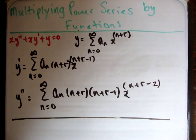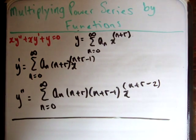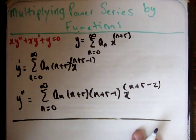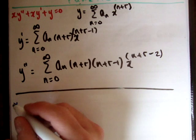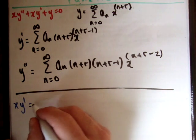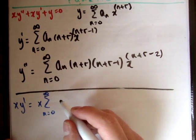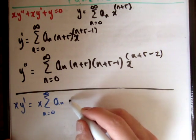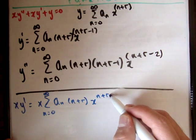So what I'd like to do now is basically multiply each of these functions here by x. So let's do the following. If I multiply x times y prime we get x times the sum n equals 0 to infinity of a sub n times n plus r times x to the n plus r minus 1.